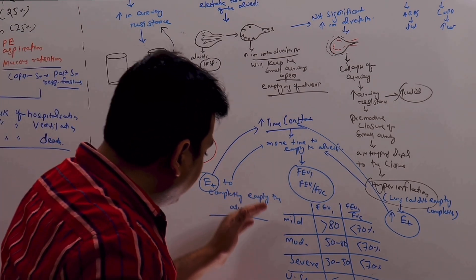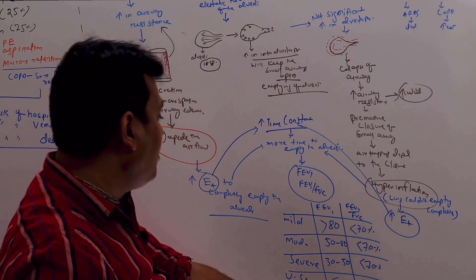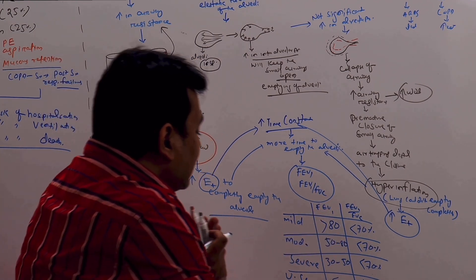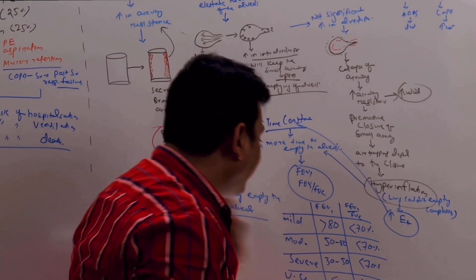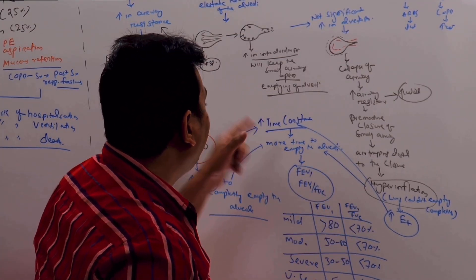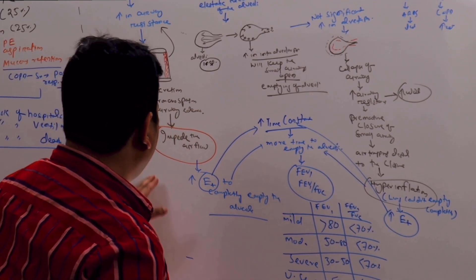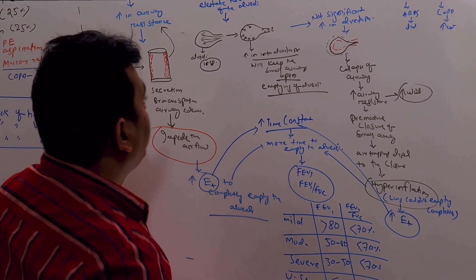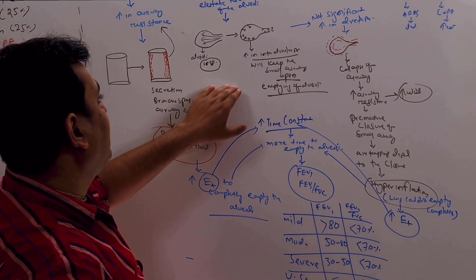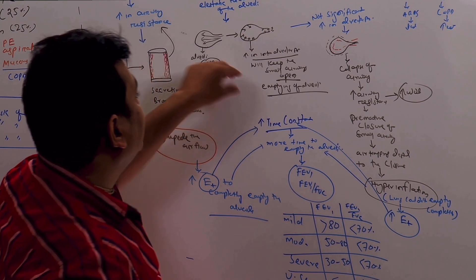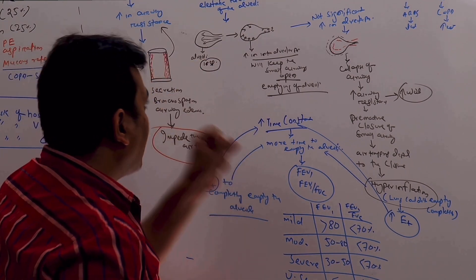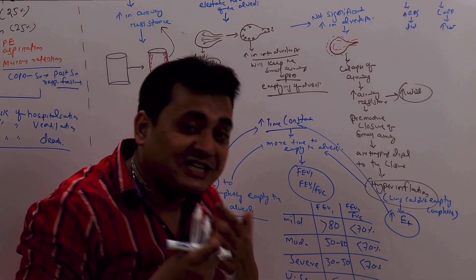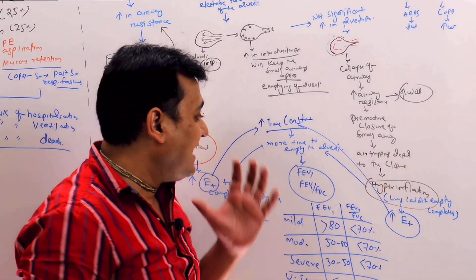That means, whenever the severity is increasing, only 30% of the total volume is getting expelled in the first second. So that means, to expel the complete alveoli, we need more and more time. So more and more time means we have an increased time constant. And that comes from the pathophysiology - that is, impeding the air flow because of increase in airway resistance, because of loss of elastic recoil, that is airway collapse, and that is increase in small airway resistance, that is trapping of the air distal to the collapse, producing hyperinflation. So in both these cases, we need an increased expiratory time to completely empty the lung.